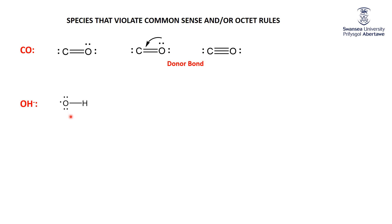Cast your mind back to a chlorine atom — was it happy? No. What did it do to get happy? It gained an electron. Here's OH — is it happy? No. What can OH do to get happy? It gains an electron. So this is the Lewis structure of OH⁻: the oxygen and hydrogen bond, and that extra electron is there instead of the oxygen having to make a second bond.